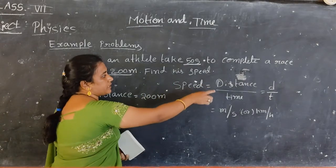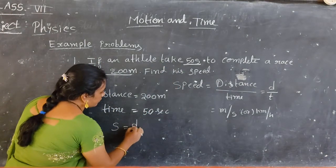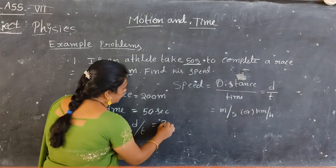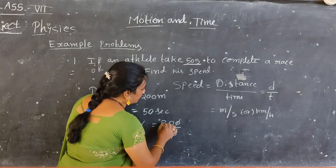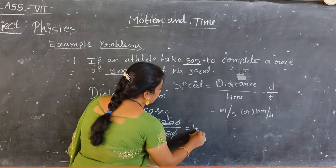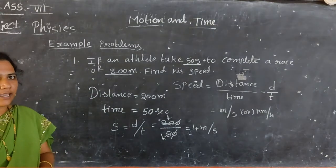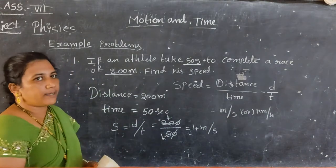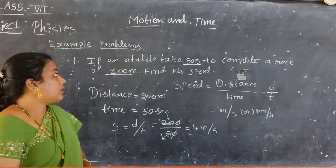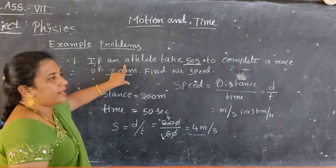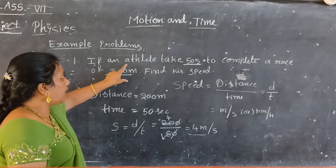The formula for speed is equal to distance by time. Speed is equal to D by T, that is equal to 200 by 50. So speed is equal to 4 meters per second. From the given values, we can calculate the speed of the athlete.